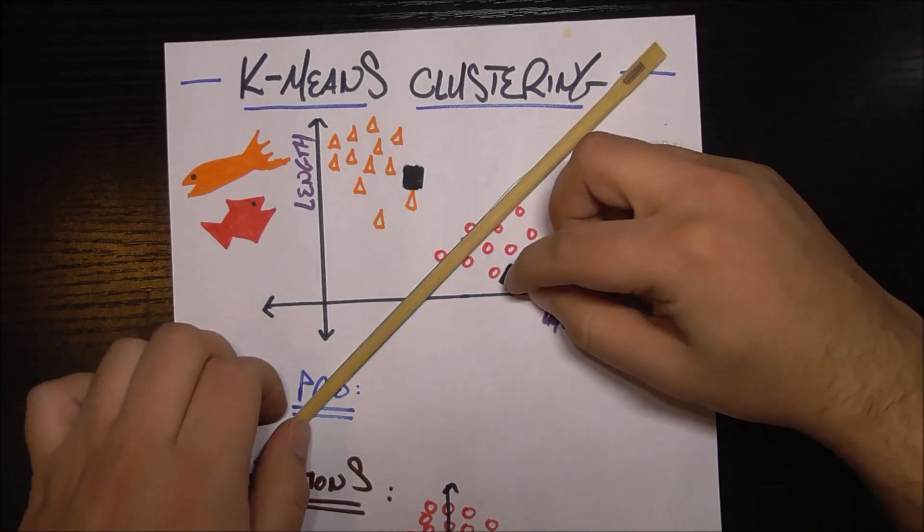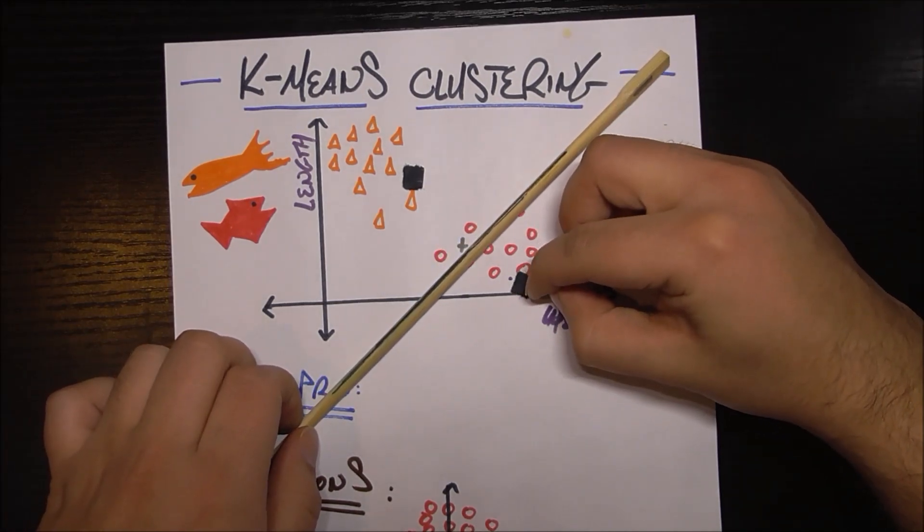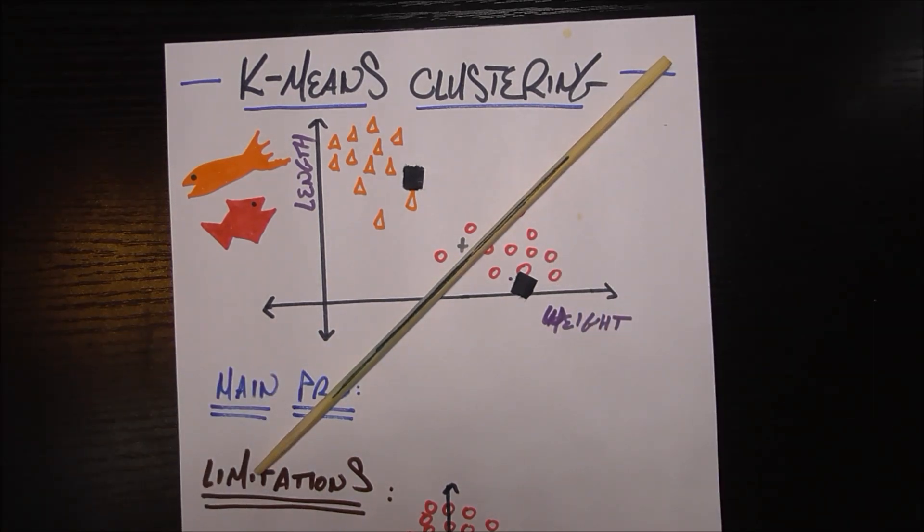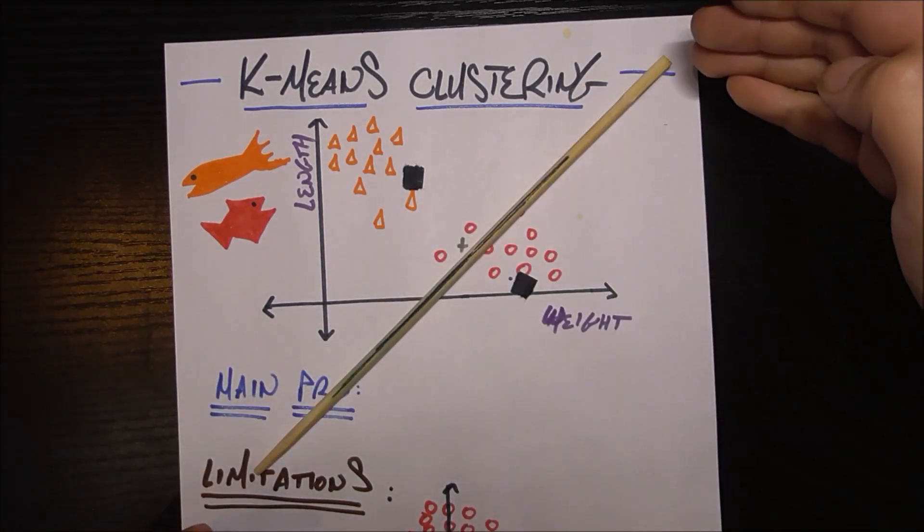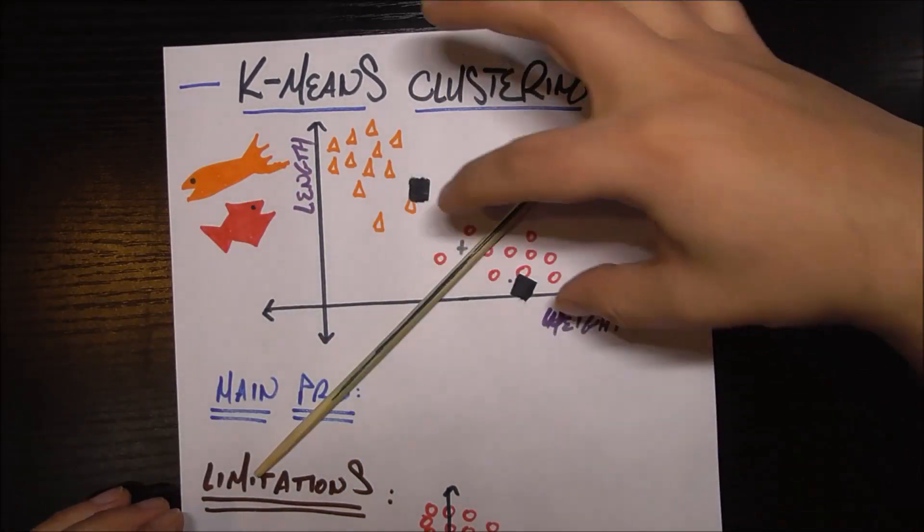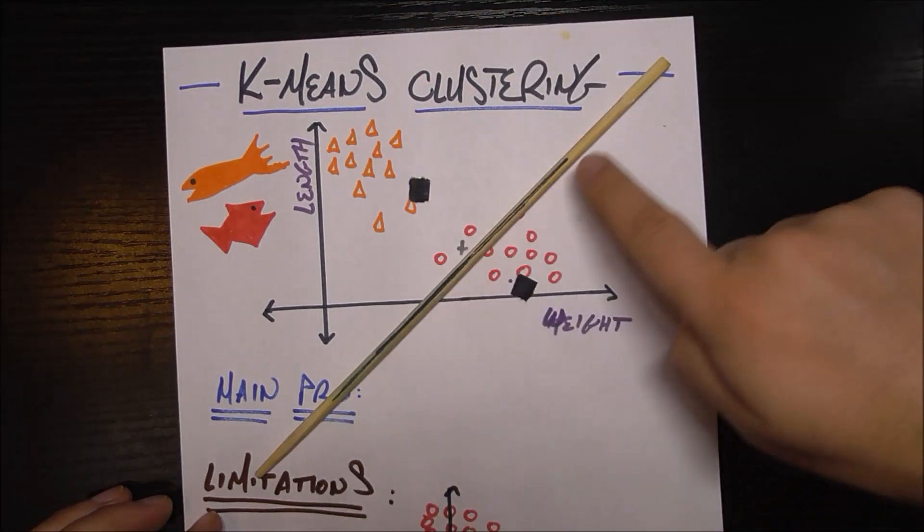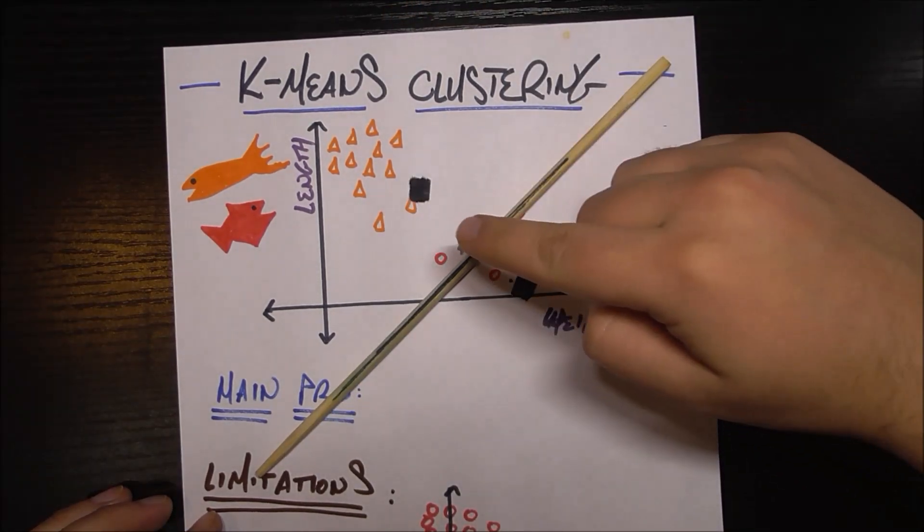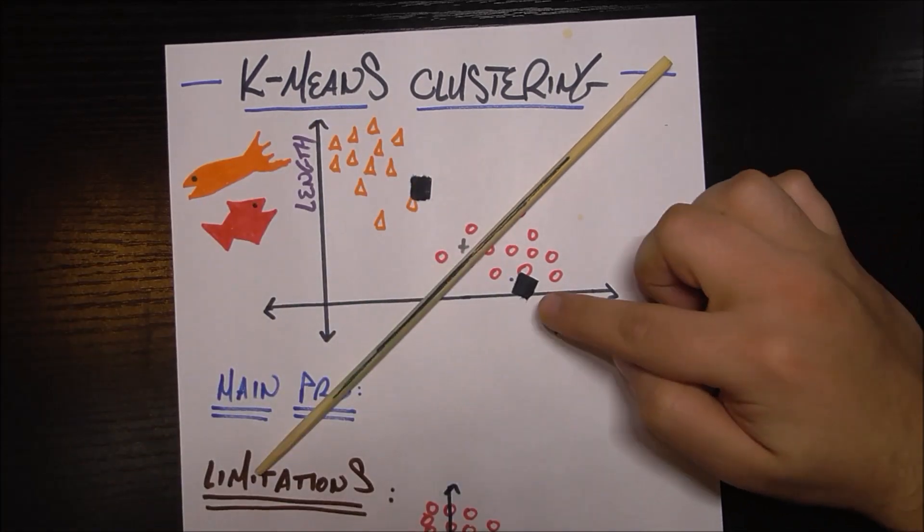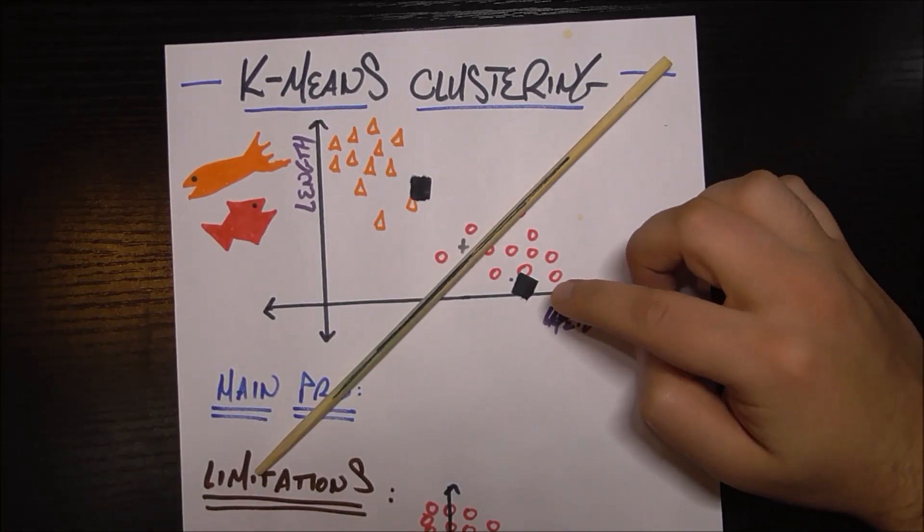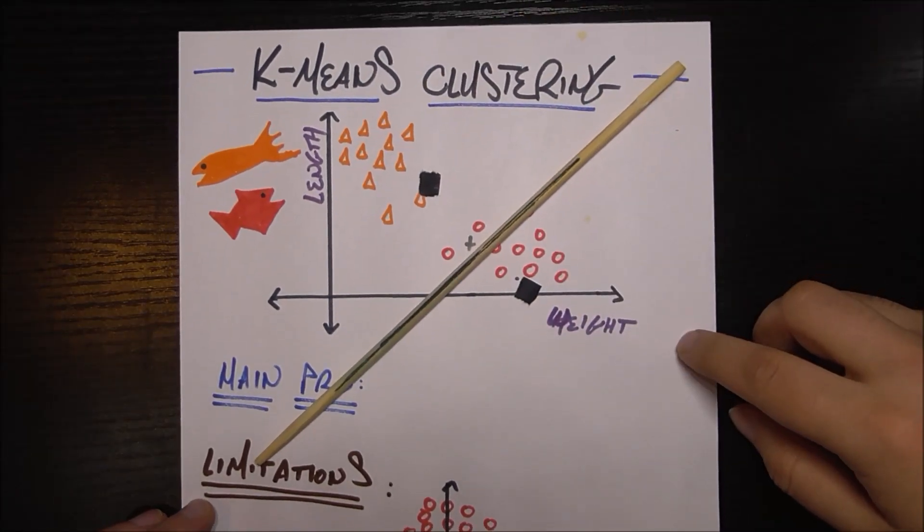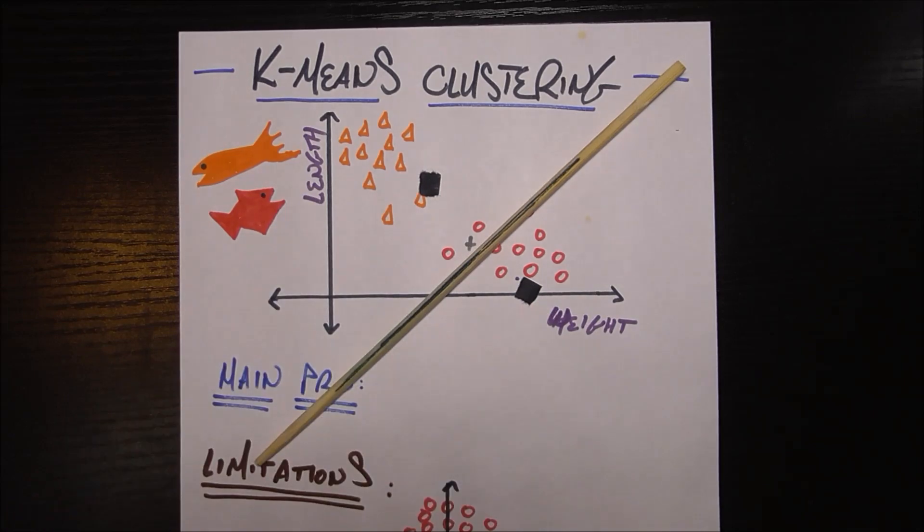I didn't explicitly say it, but the way I get this line is basically just saying this is the line that is equidistant between these two points. So every point on this line is equidistant to both points, which means that if you're on this side of the line, you're closer to this point. If you're on this side of the line, you're closer to this point. So now that we have our two new means and our new line, we reclassify all the points.